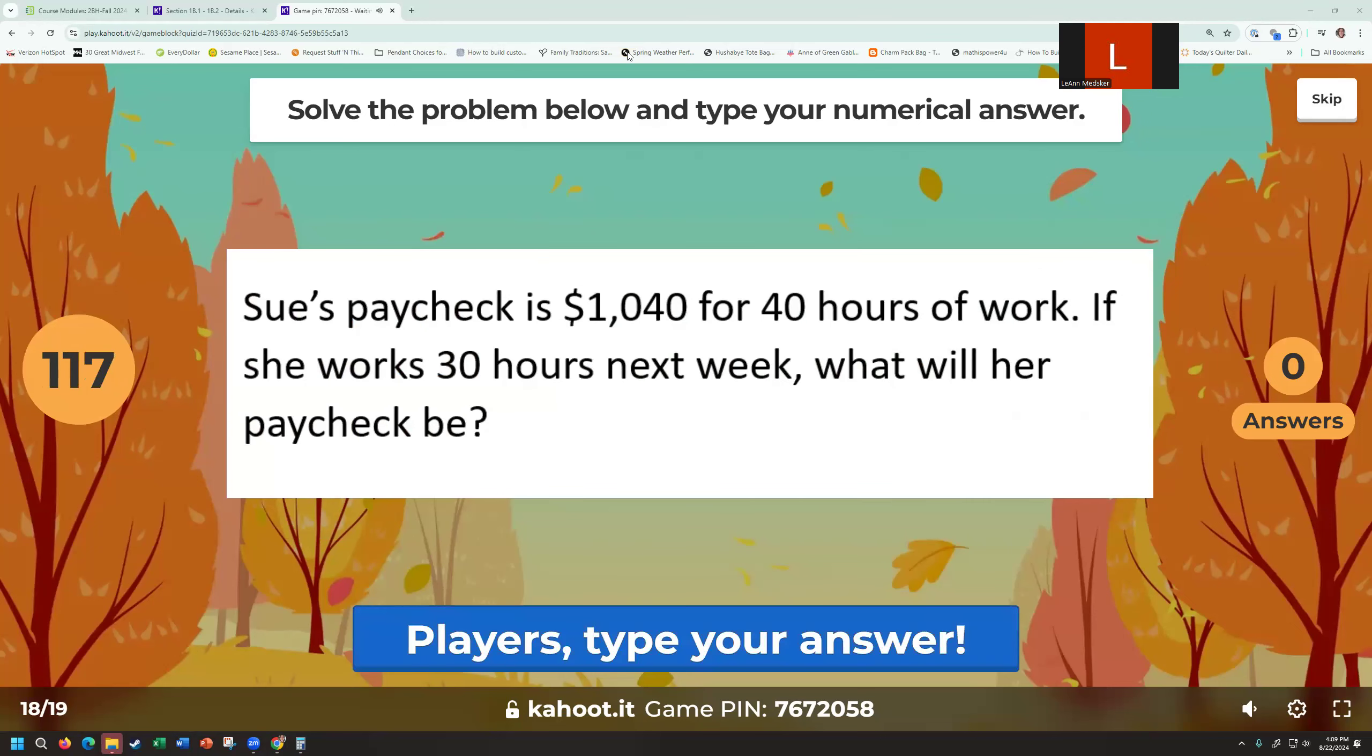So let's do the next one. I said Sue's paycheck is $1,040 for 40 hours of work. If she works 30 hours next week, what will her paycheck be? So this is just a ratio of her, how much she makes. So this week versus next, we have money per hours. So $1,040 for working 40 hours. Next week, we don't know how much money she's going to make, but we know she's going to work a little less. She's going to work 30 hours. So you do the 1,040 times the 30, and that gives you 31,240 times X would be 40X. We're going to divide to get X by itself. So we can solve for that paycheck. And it looks like her paycheck would only be $780. And again, you would type that in as just 780 since they said only the numerical part.